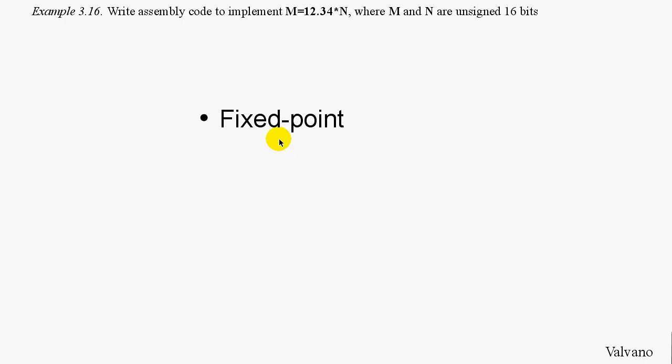Fixed-point allows us to perform calculations on non-integer values using just integer operations, and we will do it using the FDIV instruction. An overflow can happen when the result is too large to fit back into the precision of our number system.